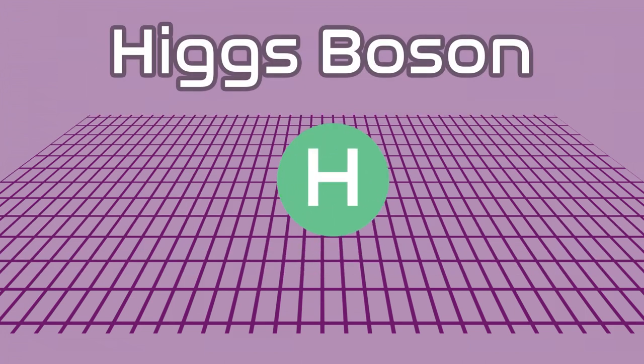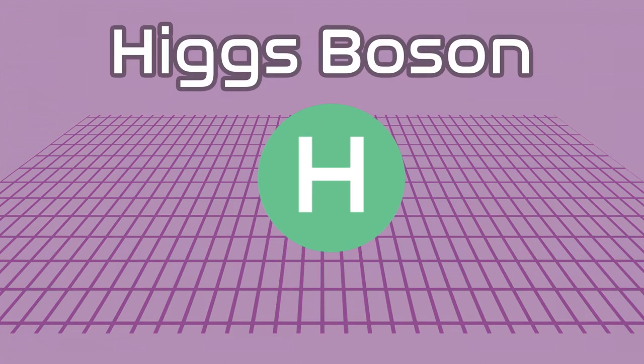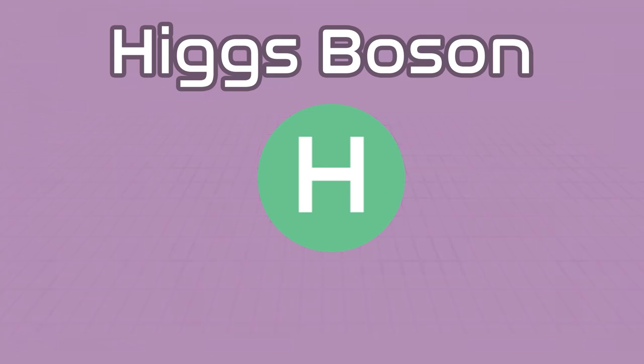The Higgs boson particle itself is a ripple in the field, which can interact with other particles and give them mass. This should not be confused with creating mass. The mass is already there in the field — it's just granting the mass. The more a particle interacts with the field, the more mass it will collect.